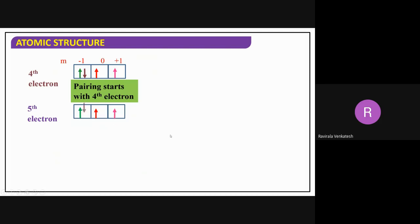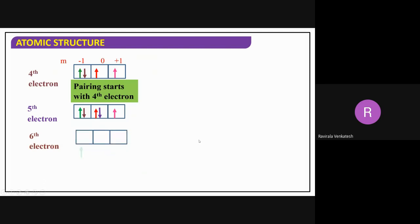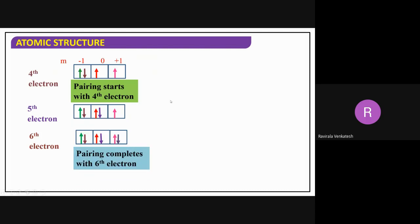So the sequence is: half-filled first, then pairing of electrons begins. The first, second, and third electrons fill one each into the three orbitals — half-filled. Then the fourth, fifth, and sixth electrons pair up to completely fill the 2p subshell. This is how we fill electrons according to Hund's rule.